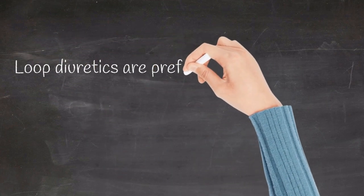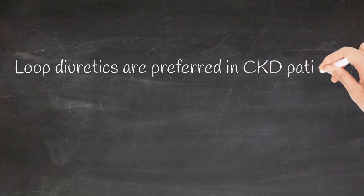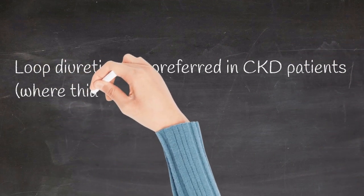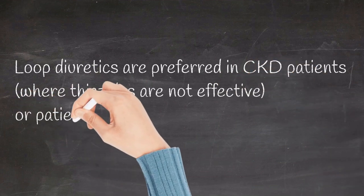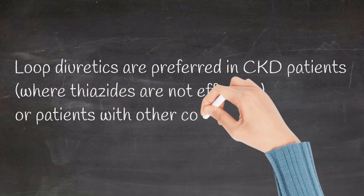Loop diuretics are preferred in hypertensives with chronic kidney disease where thiazide-like diuretics are ineffective, or in patients with comorbidities like heart failure which warrant the use of loop diuretics.